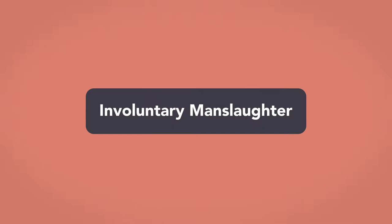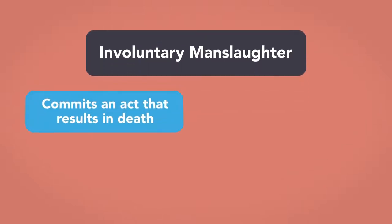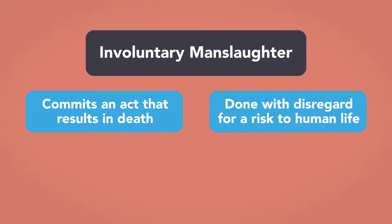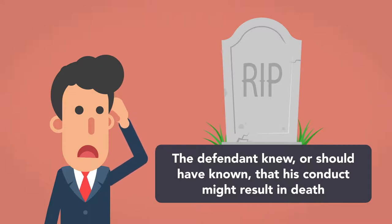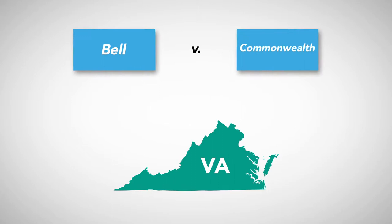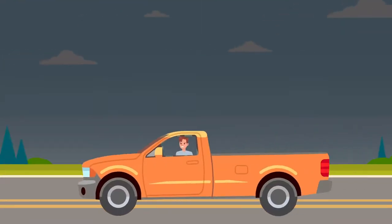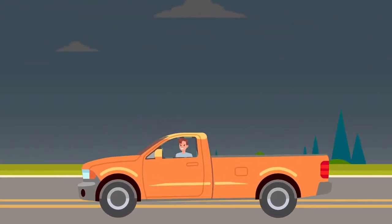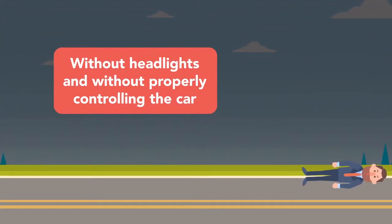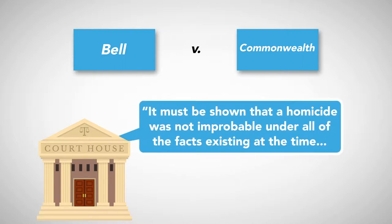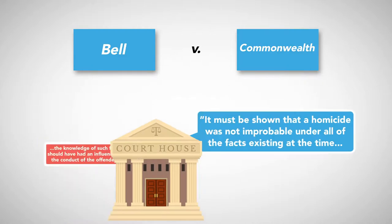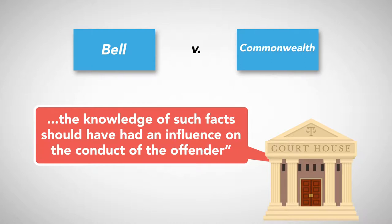Involuntary manslaughter is the appropriate charge when a defendant commits an act that results in death and the act is inherently dangerous or done with a disregard for the risk to human life. This means that the defendant knew, or should have known, that his conduct might result in death. In the Virginia case Bell v. Commonwealth, a defendant was convicted of involuntary manslaughter after he struck and killed a pedestrian while operating a car at excessive speeds, driving on the left center of the highway, without headlights, and without properly controlling the car. The court noted that it must be shown that a homicide was not improbable under all of the existing facts at the time, and that knowledge of such facts should have had an influence on the conduct of the offender.